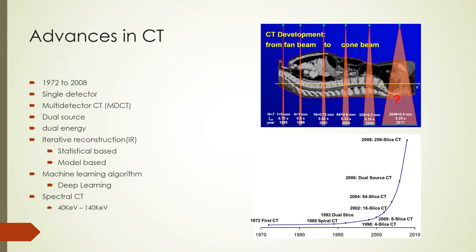CT technology has advanced from single-slice scanners built in 1972 to multi-detector CT scanners. There are currently CT scanners with 320 detector channels and scanners capable of reconstructing 512 slices from 256 detector channels. Dual source, dual detector, and dual energy CT scanners are now common, along with advances in reconstruction algorithms like statistical iterative reconstruction and model-based iterative reconstruction.